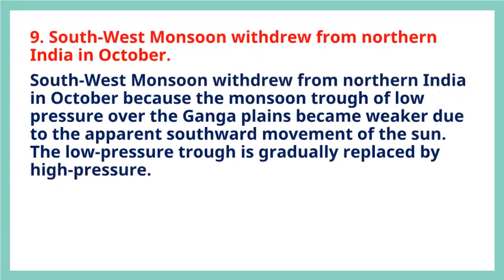Question 9: The southwest monsoon withdrew from northern India in October. The southwest monsoon withdrew from northern India in October because the monsoon trough of low pressure over the Ganga plains became weaker due to the apparent southward movement of the sun. The low-pressure trough is gradually replaced by high pressure.